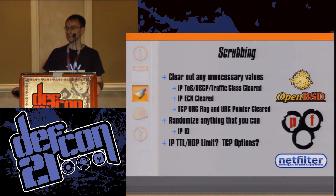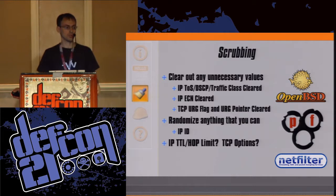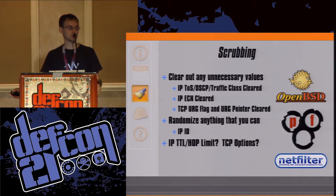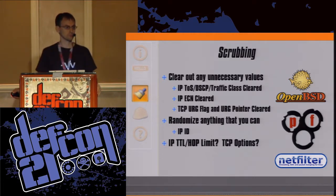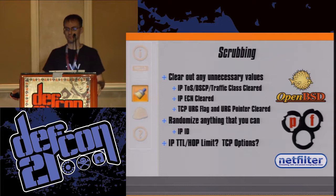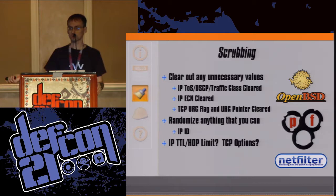Next, randomize anything you can — like the IP ID — because NMAP and other tools do algorithm analysis. We don't want to give them an opportunity to reverse-engineer or match it with a previously enumerated algorithm in NMAP. This left me with the IP time to live and the TCP options. In this case, scrubbing or randomizing wouldn't work. A new technique was needed — and this is where I apply the normalization.